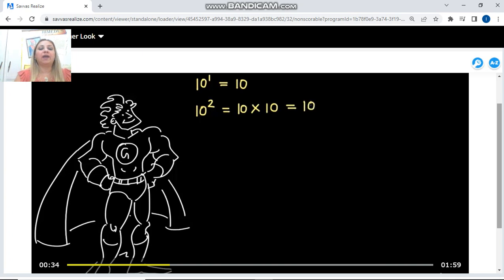What if I have 10 to the third power? What does that mean? I am multiplying 10 three times by itself. 10 times 10 times 10 is equal to 1,000, which is 10 to the third power.